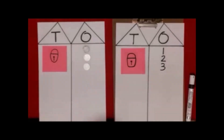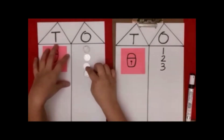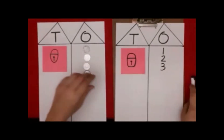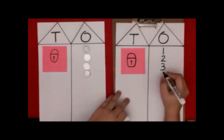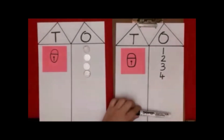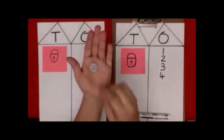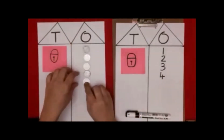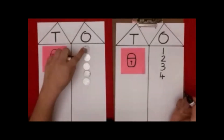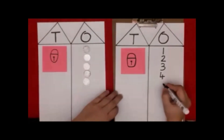Now one more has come. One, two, three, four. One more has come into the ones house. One, two, three, four, five.